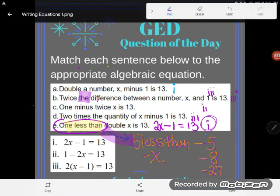All right. So A matches with one. B matches with three. C is two. D is three. And E is one, surprisingly. If you have any questions about this or any other GED math concepts, be sure to drop them in the comments and I'll do my best to answer them.